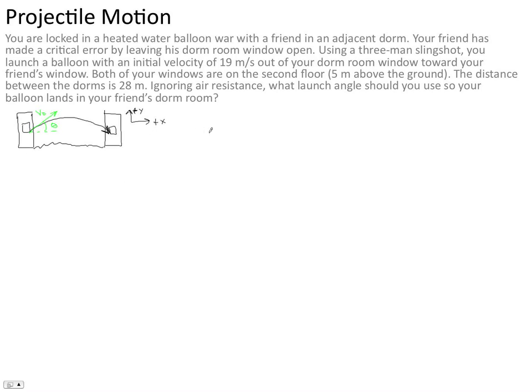well, let's say that the balloon starts at x0 equals 0. And we know that the quad is 28 meters wide. So the final x position is 28 meters.